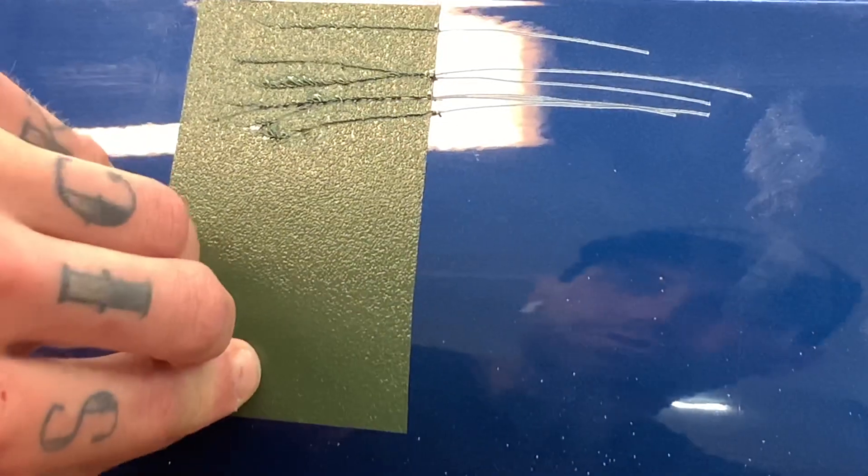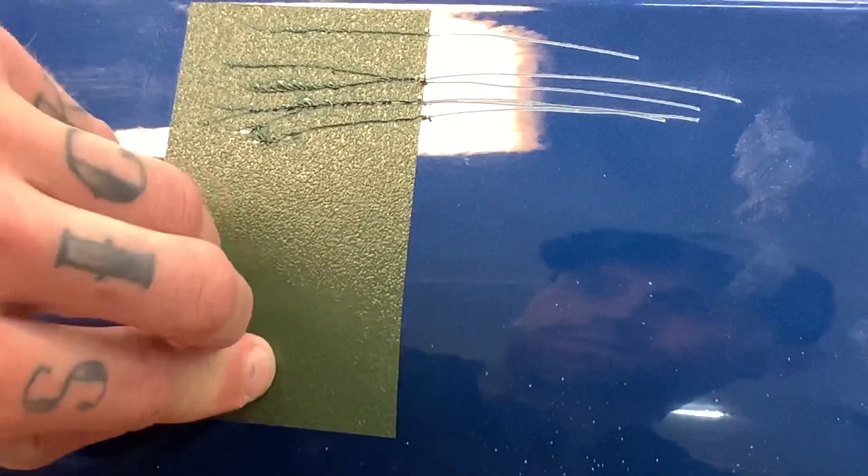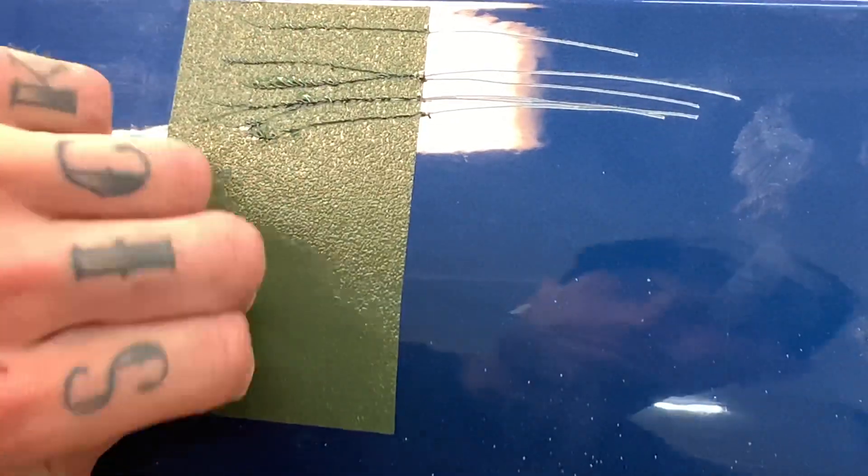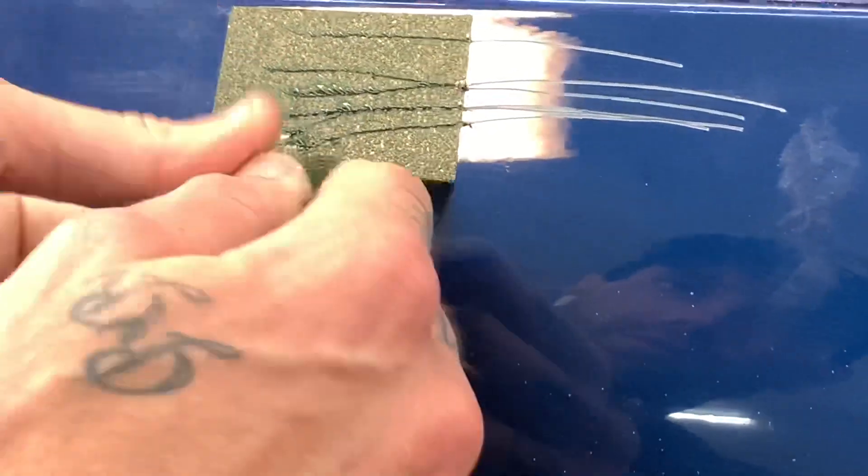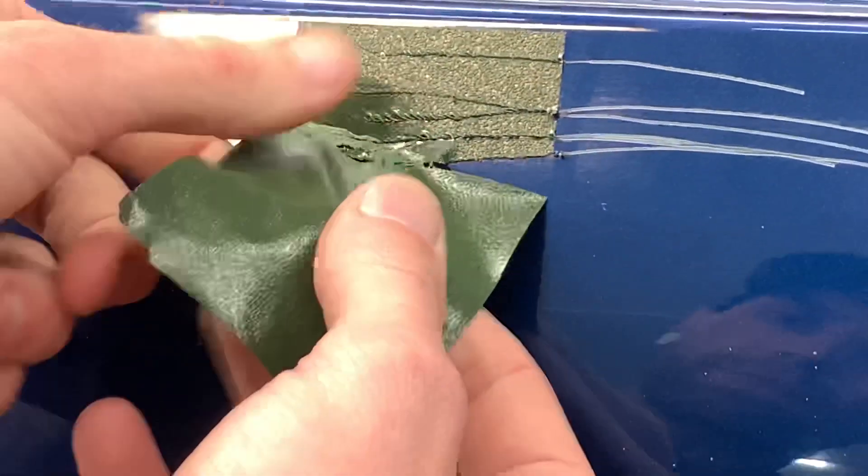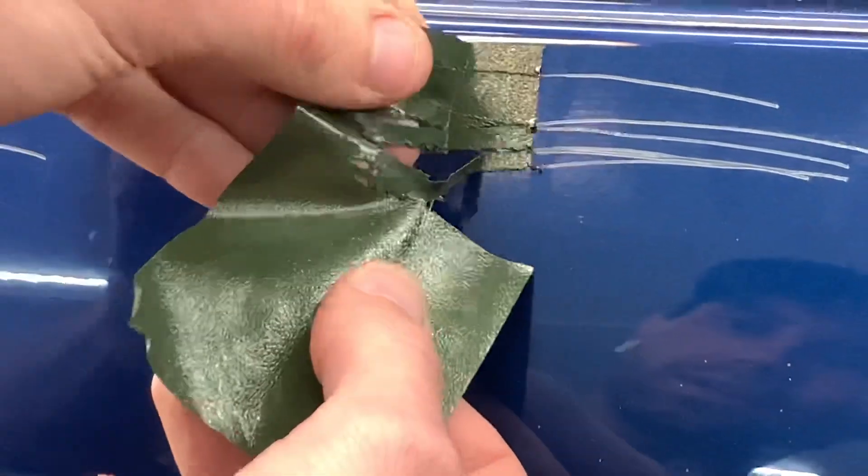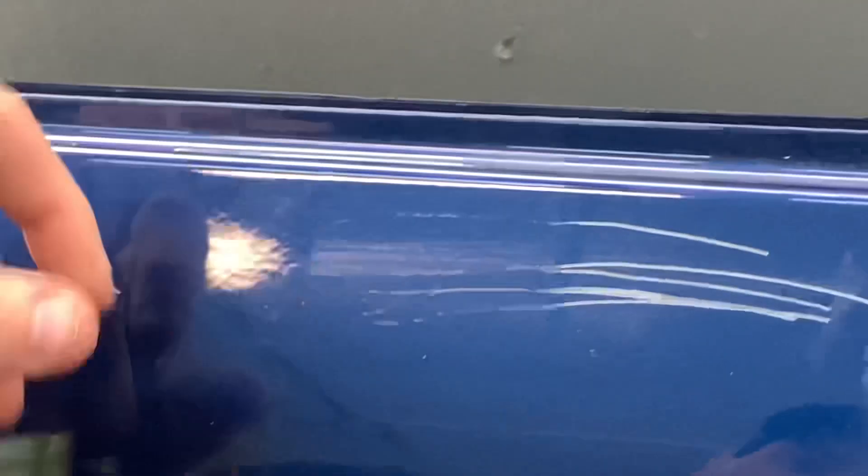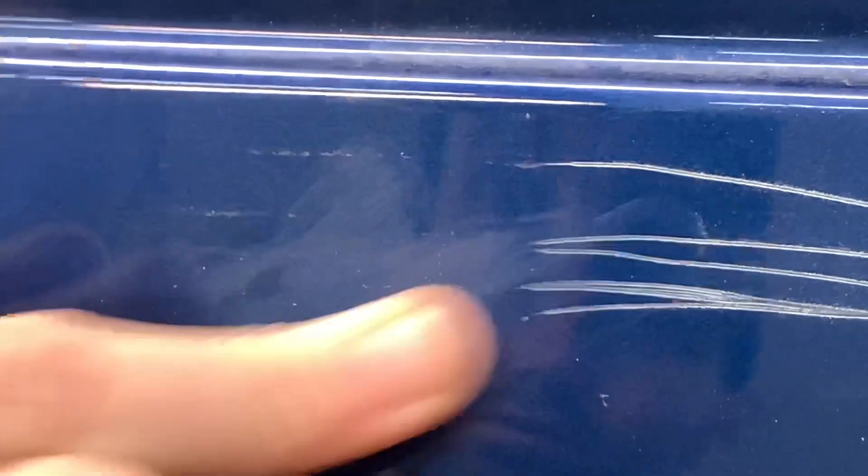Next up is our screwdriver. The material itself is pretty shredded. And again, we have no damage to the paint underneath other than some leftover residue and a small scratch right here.